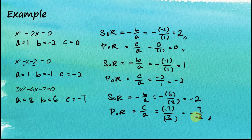This is how we find the sum of roots and the product of roots from the coefficients. Sum of roots equals negative b over a, and the product of roots equals c over a.